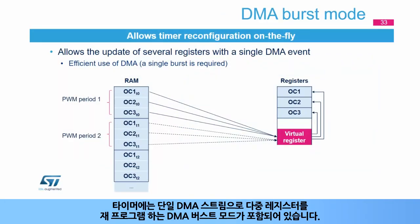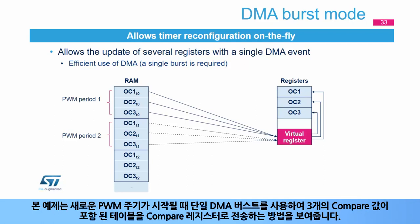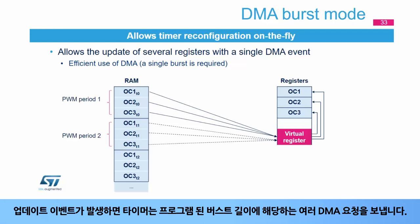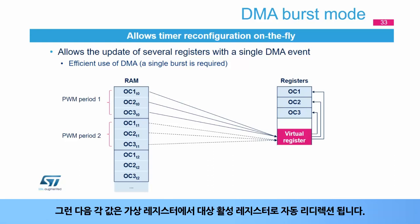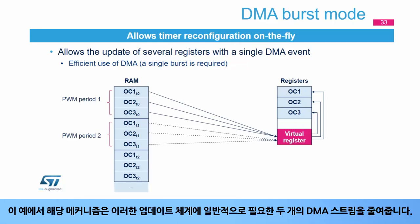The timer includes a DMA burst mode to reprogram multiple registers with a single DMA stream, allowing modification of several runtime parameters simultaneously, such as duty cycle and frequency of several channels or dynamic change of timer configuration. The example shows how a table containing three compare values can be transferred into the compare registers with a single DMA burst when a new PWM period starts. The DMA must be programmed in memory-to-peripheral mode, pointing to a unique location in the timer. When the update event occurs, the timer sends a number of DMA requests corresponding to the programmed burst length. This mechanism saves two DMA streams that would normally be necessary for such an update scheme.